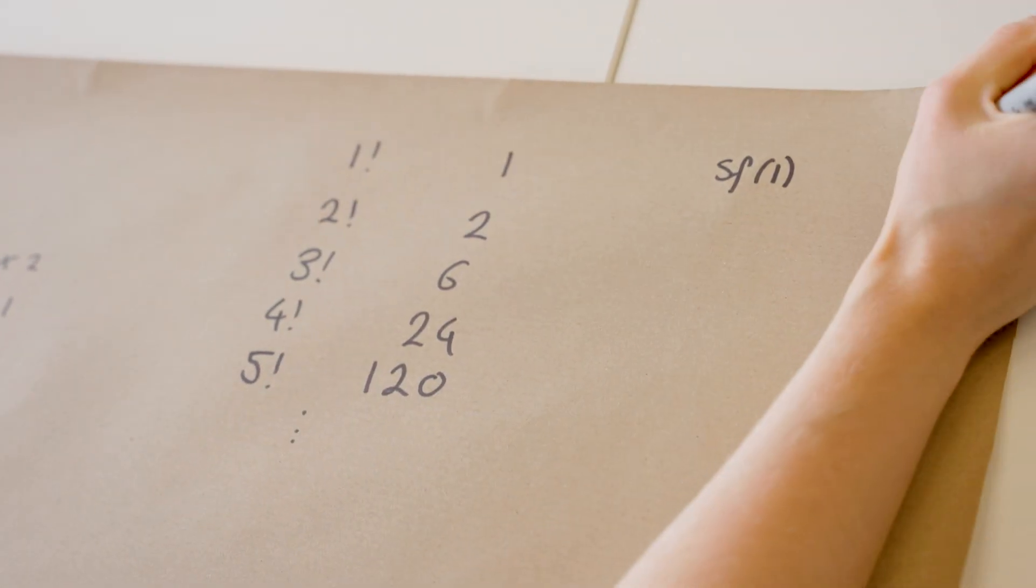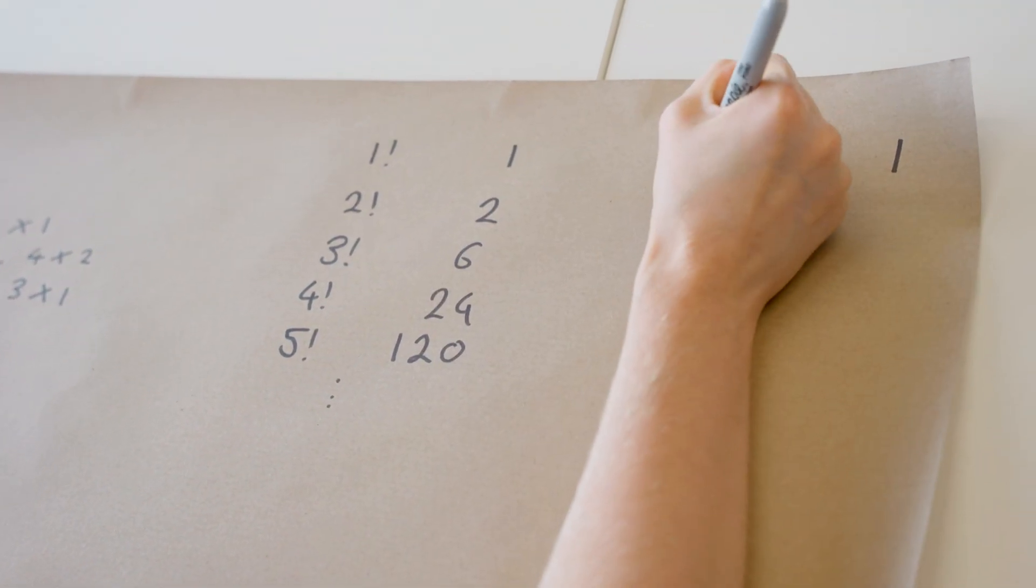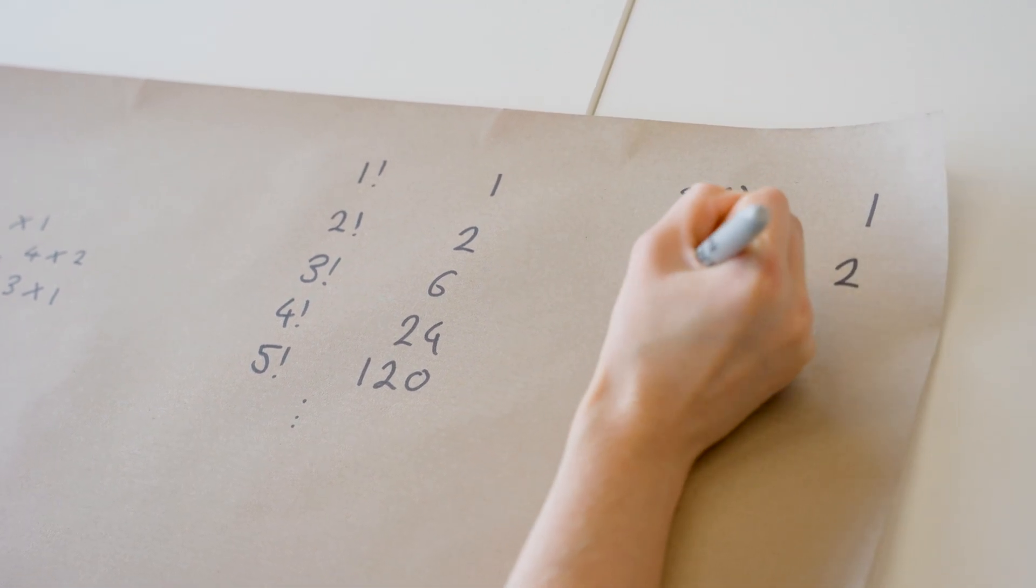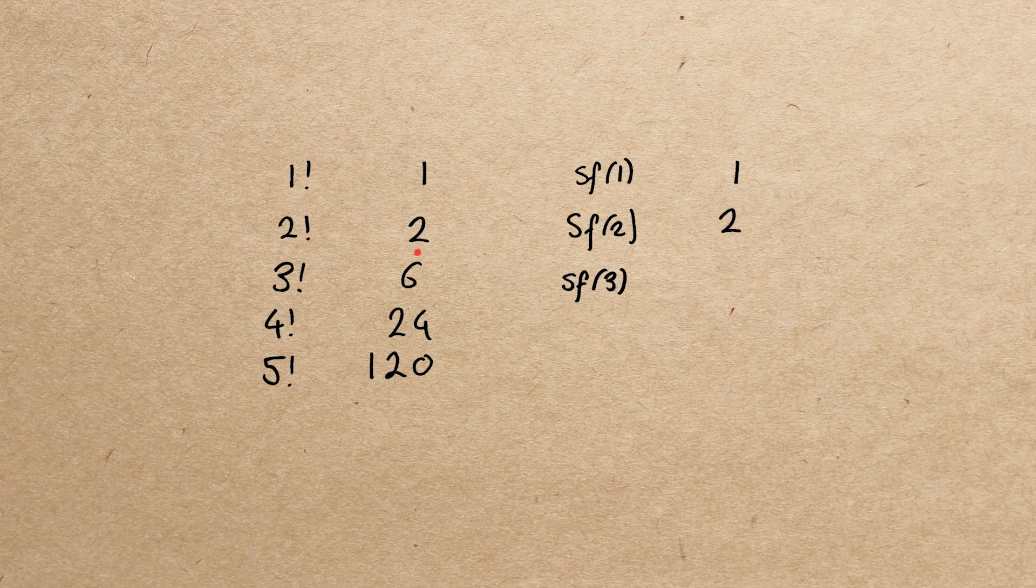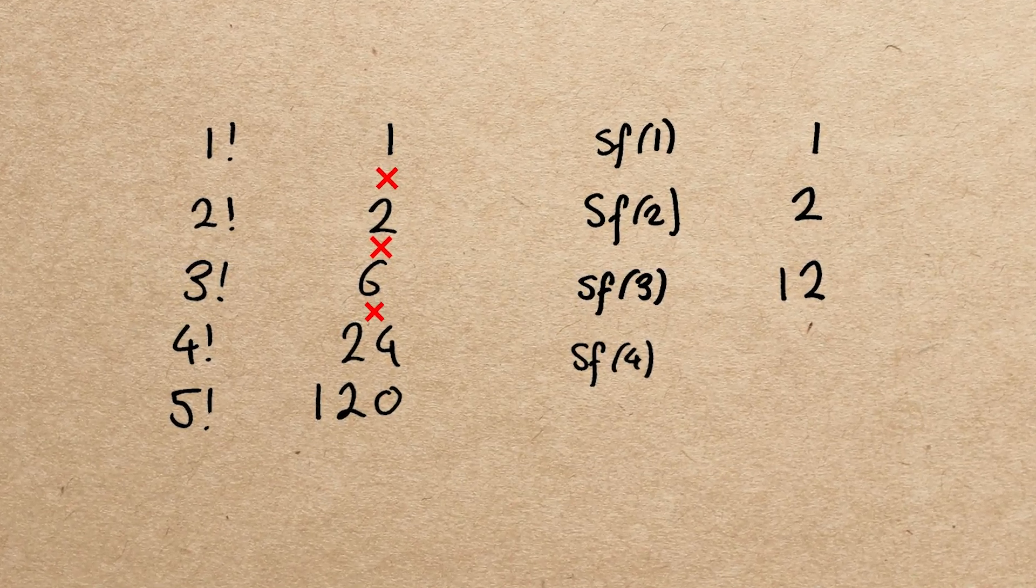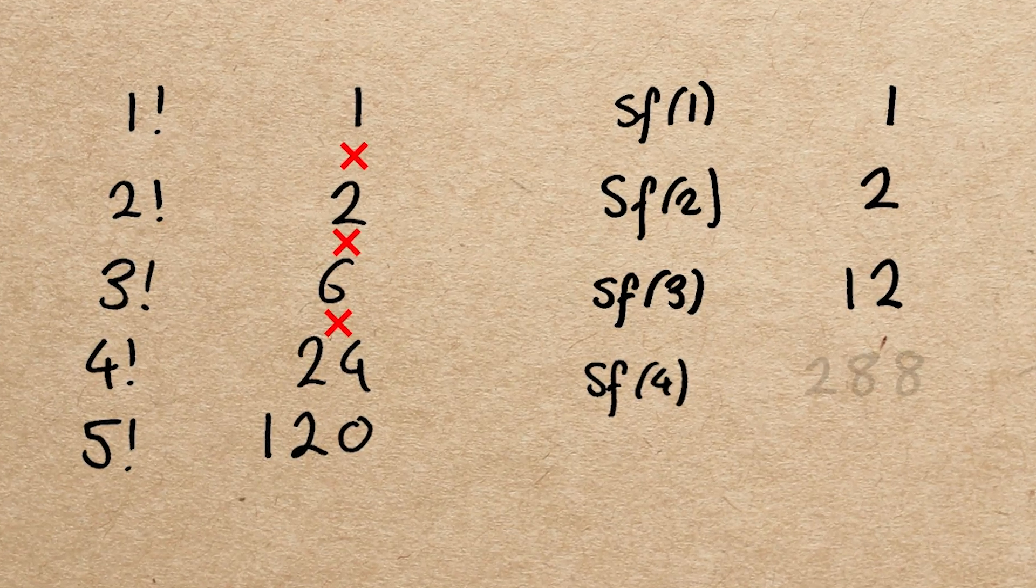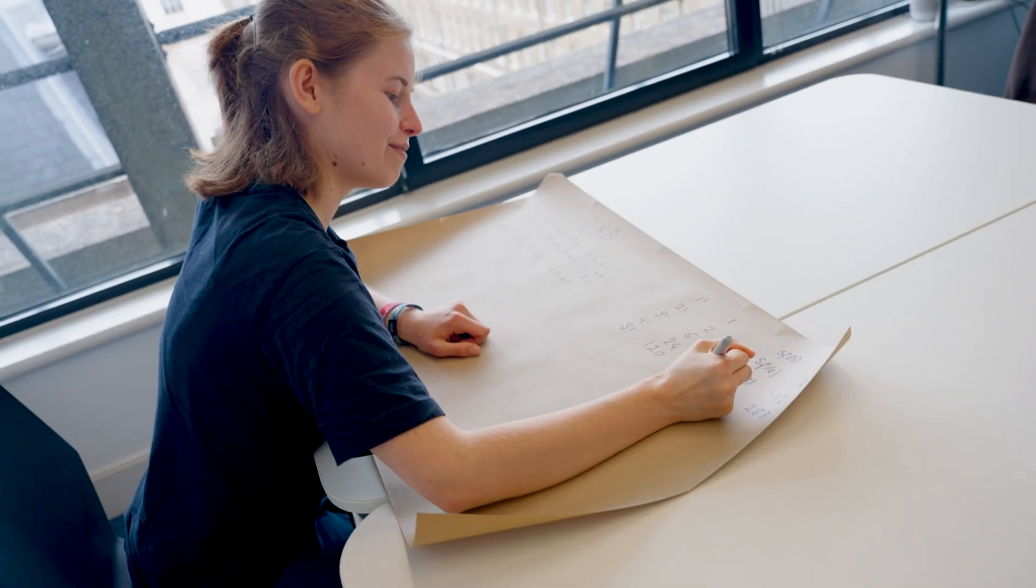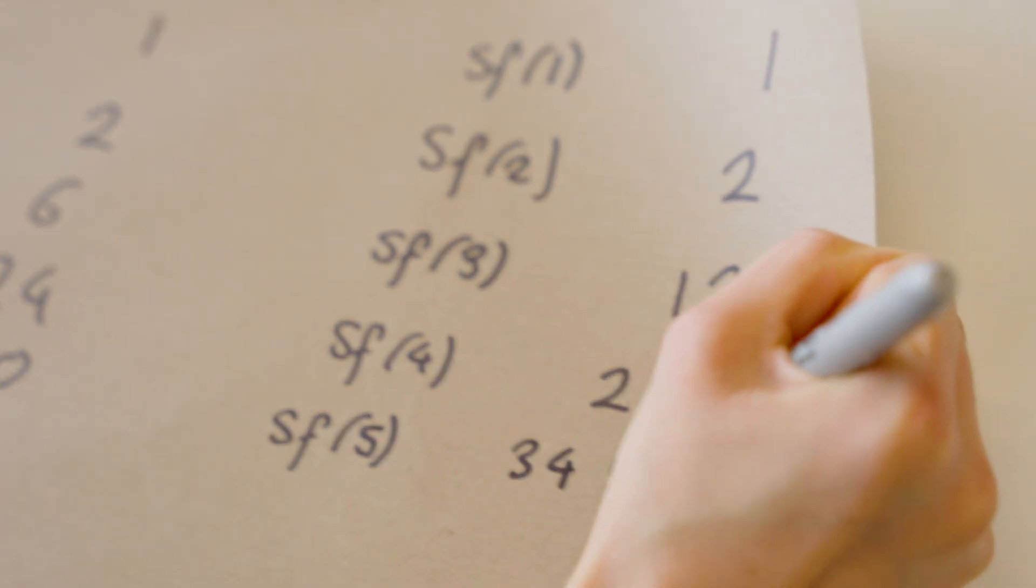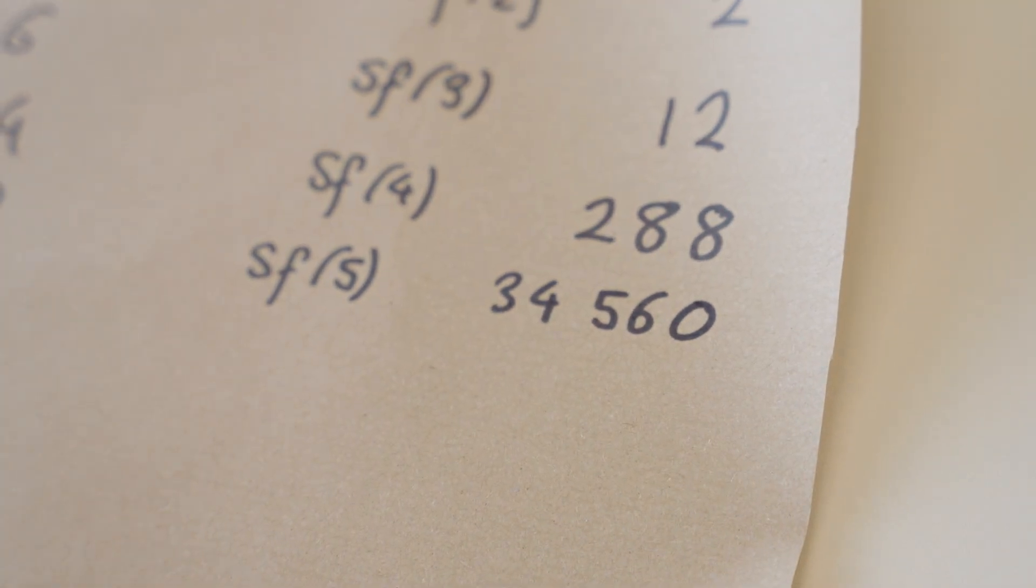Now for the superfactorials, 1 superfactorial is just 1 factorial, so that's 1. 2 superfactorial is then 1 times 2, which is 2. 3 superfactorial is 6 times 2 times 1, so that's 12. 4 superfactorial, 24 times 6 times 2 times 1, and as I'm sure you'll all have got just as quickly, 288. And 5 superfactorial is this times 120, which I believe is 34,560.